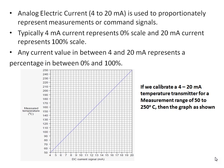Analog electric current of 4 to 20 mA is used to proportionally represent the measurement — whether it is a process variable or command signal and a manipulating variable. Typically, 4 mA current represents 0% scale and 20 mA current represents the 100% scale.